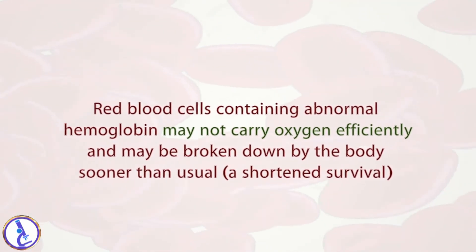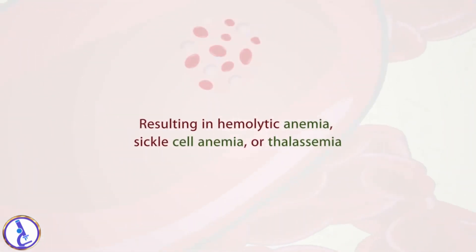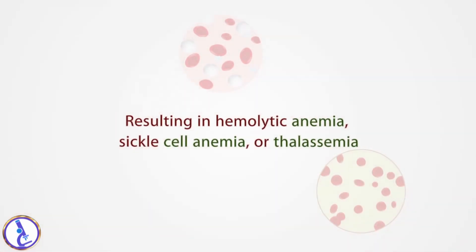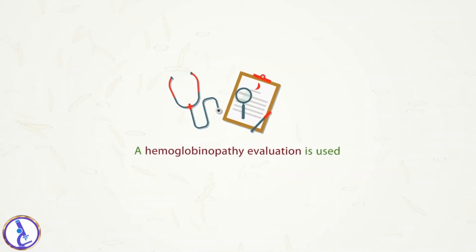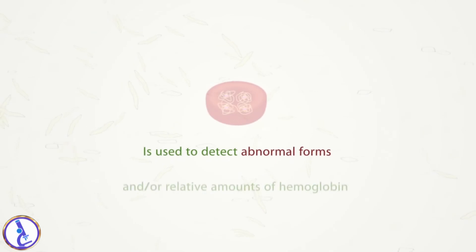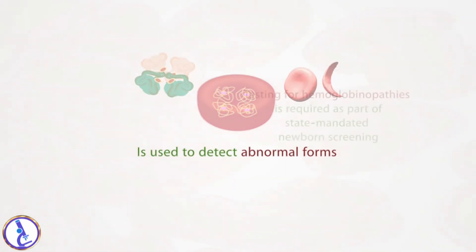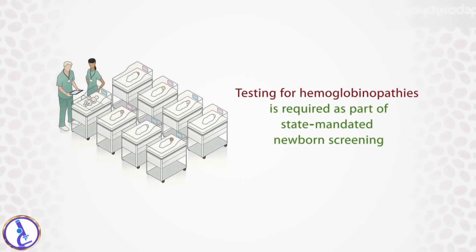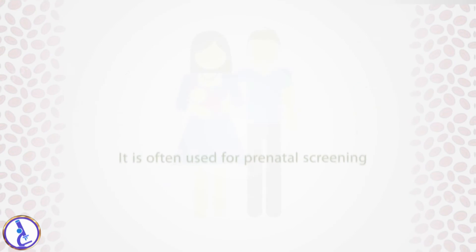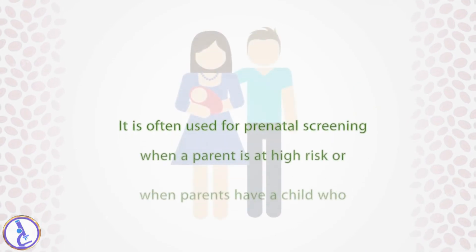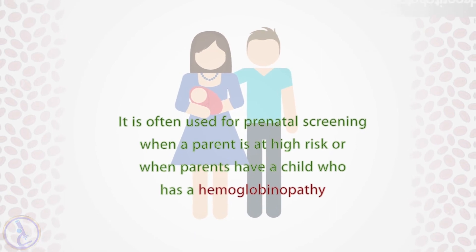Red blood cells containing abnormal hemoglobin may not carry oxygen efficiently and may be broken down by the body sooner than usual — a shortened survival — resulting in hemolytic anemia, sickle cell anemia, or thalassemia. A hemoglobinopathy evaluation detects abnormal forms and relative amounts of hemoglobin. Testing is required as part of state-mandated newborn screening and is often used for prenatal screening when a parent is at high risk or has a child with a hemoglobinopathy.